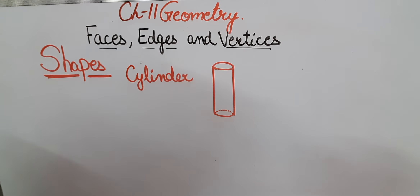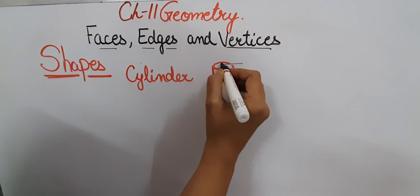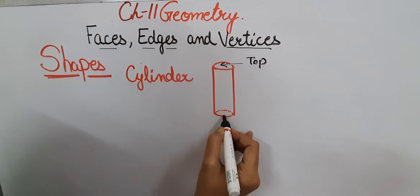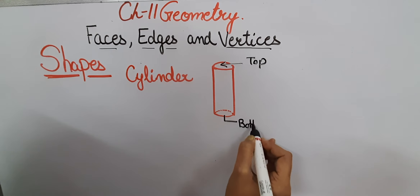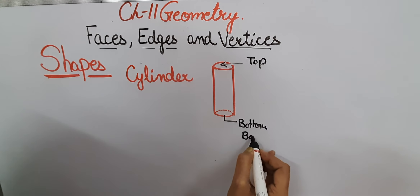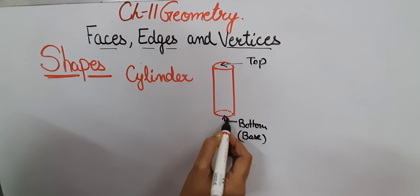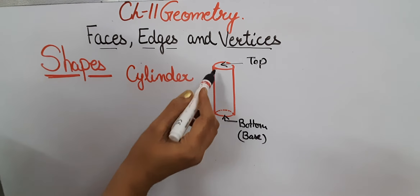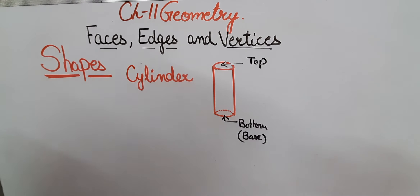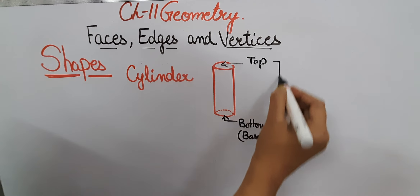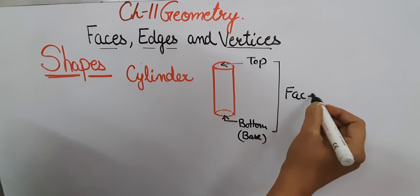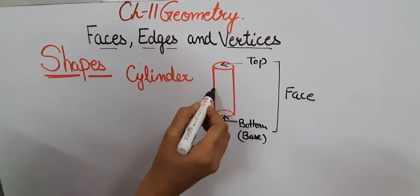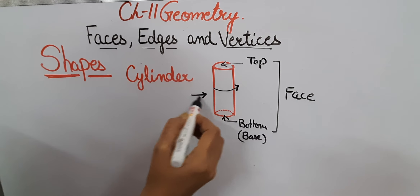This is a cylindrical shape. The cylinder has two plane surfaces or faces — that is the top surface and the base of the cylinder. These two flat surfaces are the plane faces of the cylinder. Apart from these, the side surface is the curved surface of the cylinder.